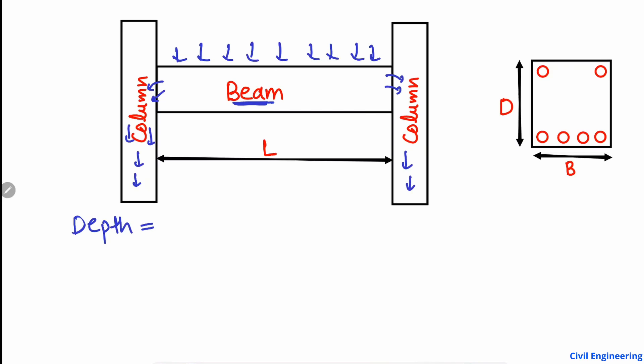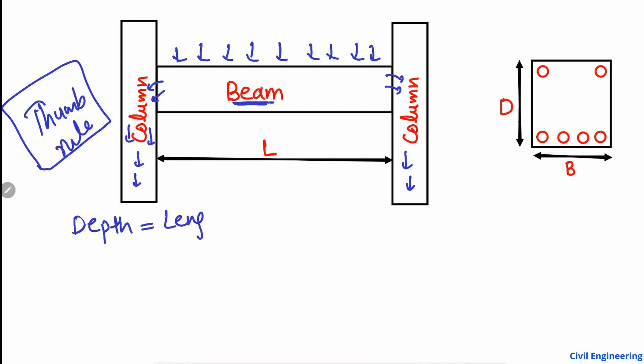Now we are interested in how we can know about the depth or the width of the beam. This is a thumb rule — it is not the exact rule to find the depth or width of the beam, but it is an approximate way to find out the depth of the beam.